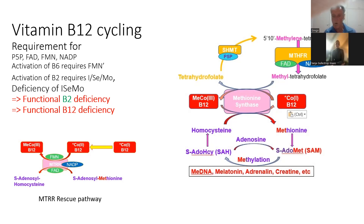Normally, methyl-B12 donates its methyl group to homocysteine to make methionine. If you can't regenerate that methyl-B12 with folate, you have inactive B12. That inactive B12 starts as cobalt-1 B12 and goes to cobalt-2 B12. To regenerate cobalt-2 B12 you need two vitamin B2 components: FMN (flavin mononucleotide) and FAD (flavin adenine dinucleotide).